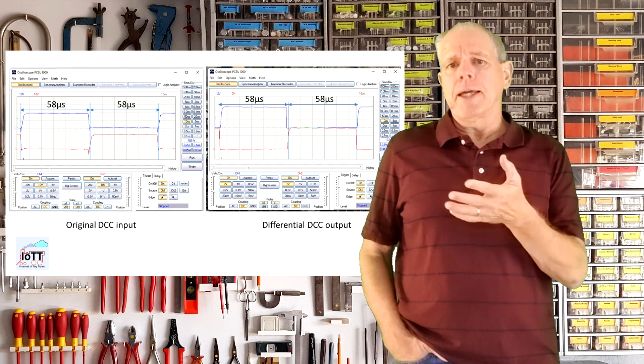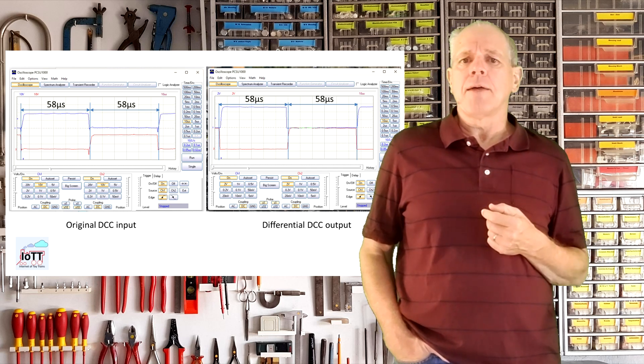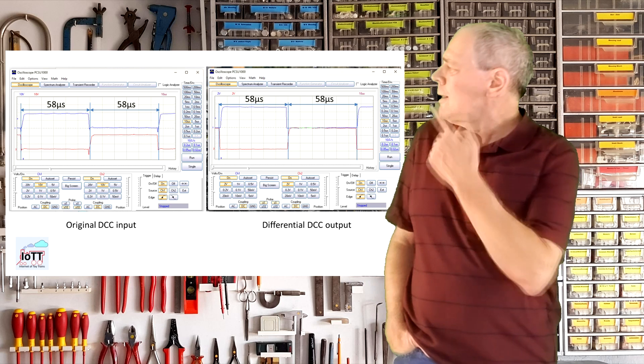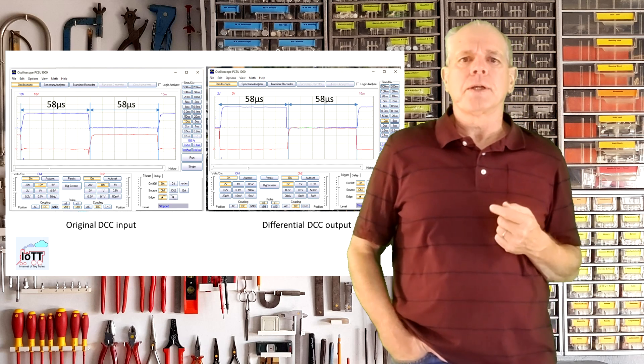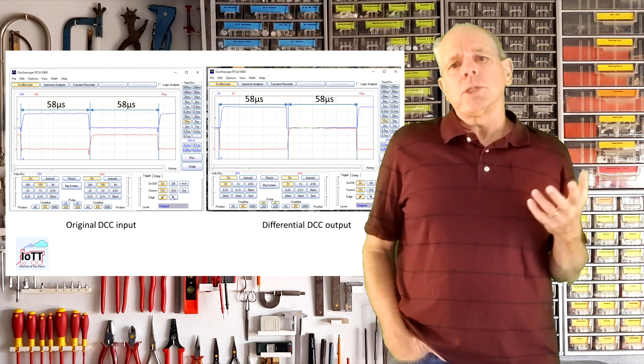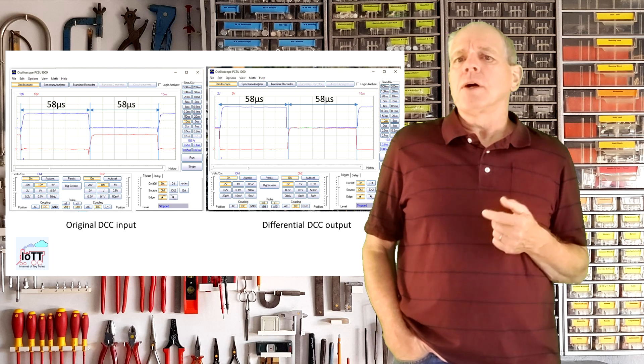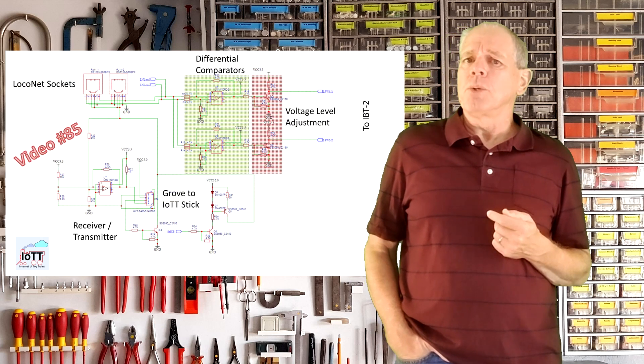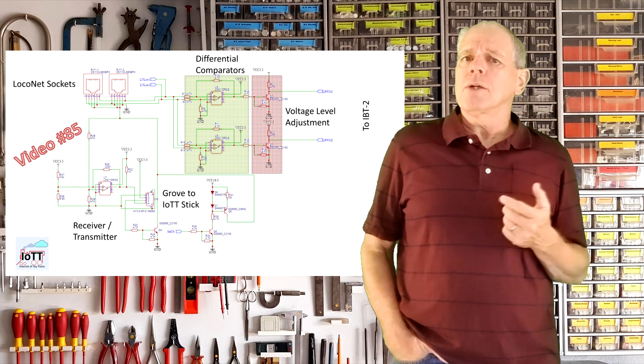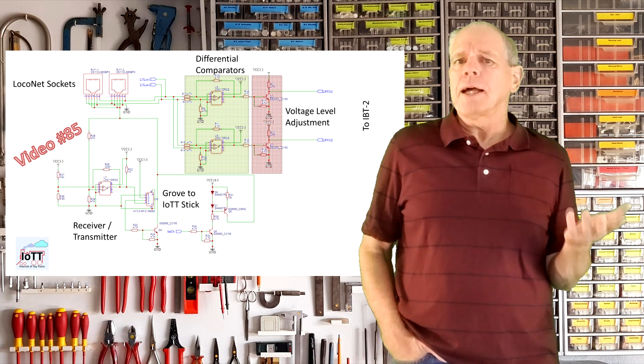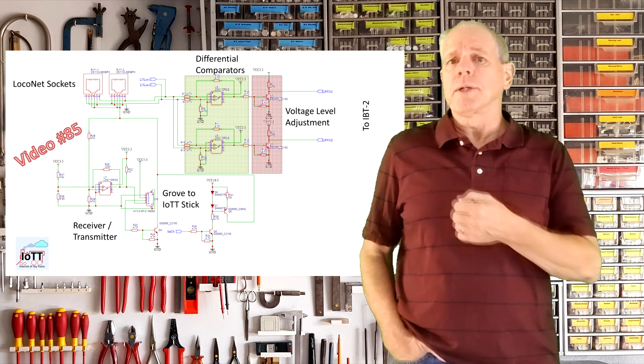The better approach therefore is using a differential input, which gives a much better replication of the original signal timing, as you can see in this oscilloscope screenshot. I used that approach already in video number 85 when working on the Red Hat PC board, which I wanted to make configurable to work either as command station or as booster.